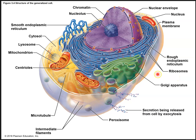You can see ribosomes on the outside of the nuclear envelope and everywhere inside the cell — either attached to a membranous structure or freely floating in the cytosol. Everything inside the plasma membrane is a semi-liquid structure known as the cytosol, and these bead-like structures are the ribosomes.